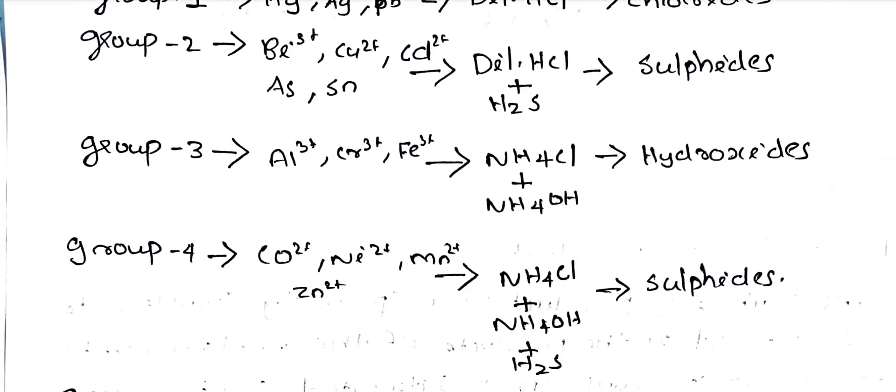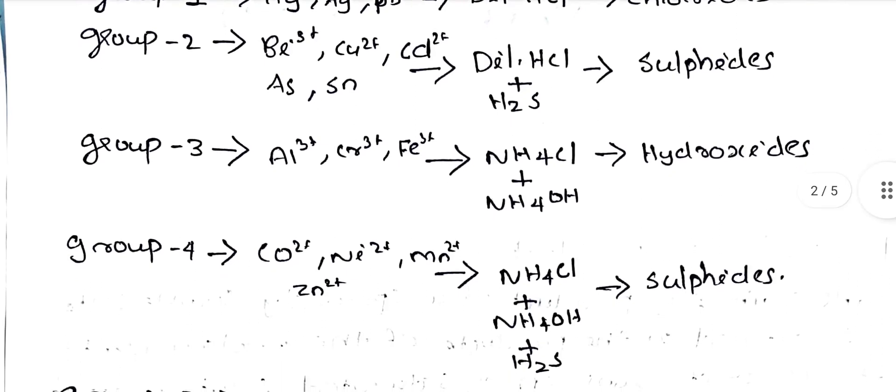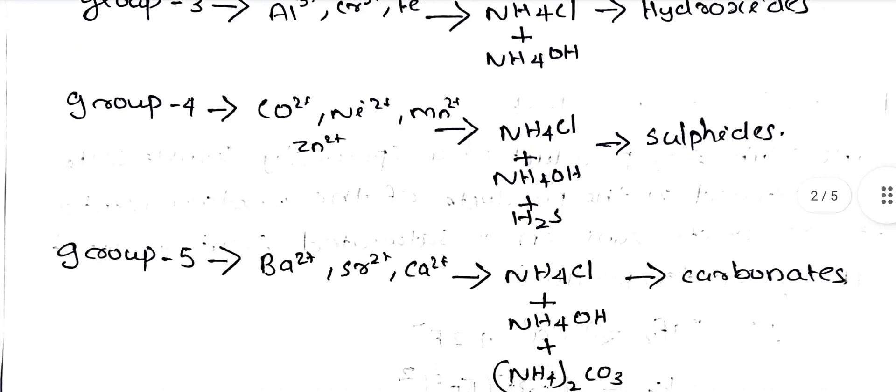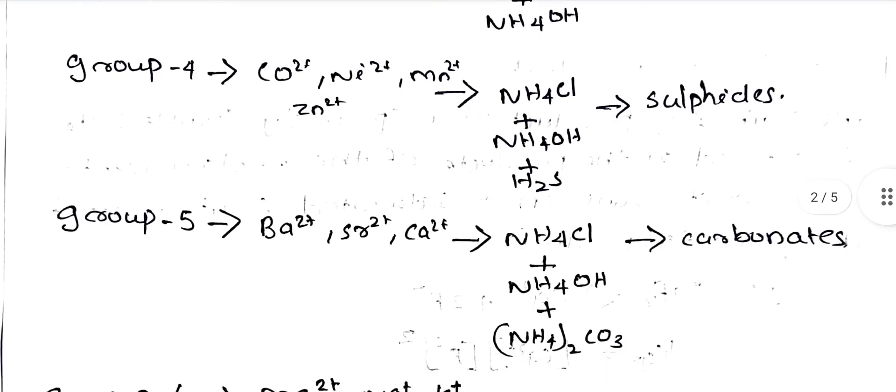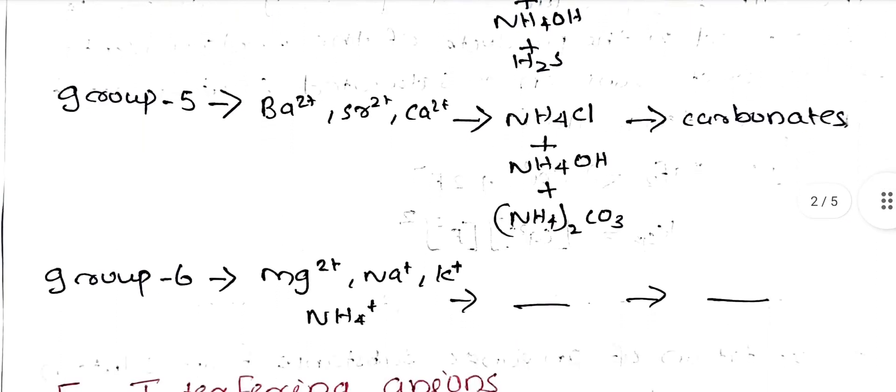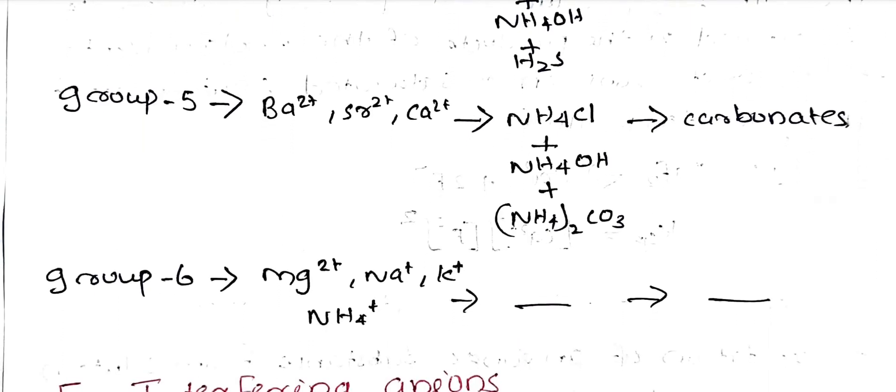Group 3 is aluminum, chromium, iron. The reagents are NH4Cl and NH4OH. It precipitates hydroxides. Group 4 is cobalt, nickel, manganese. The reagents are NH4Cl, NH4OH, and H2S. They precipitate sulfides. Group 5 uses NH4Cl, NH4OH, and NH4CO3. They have carbonates.